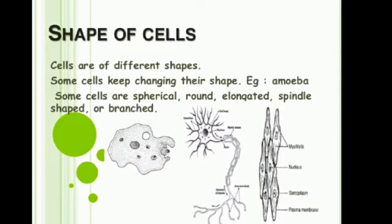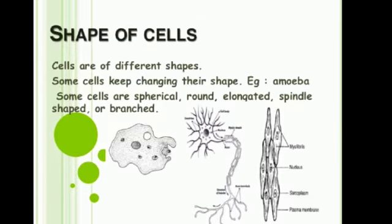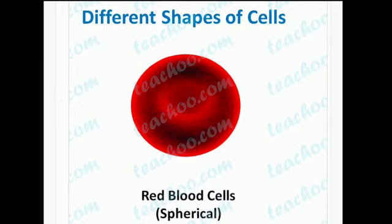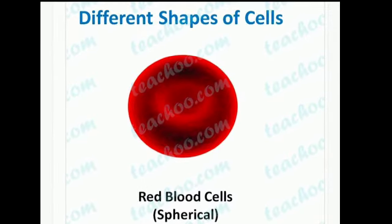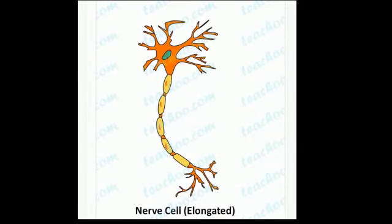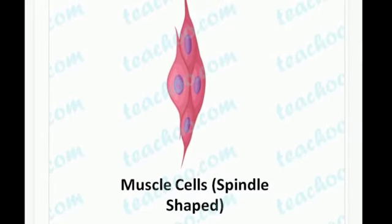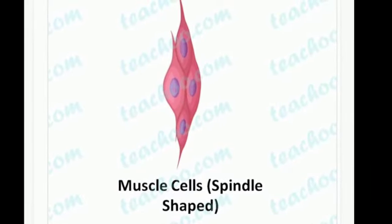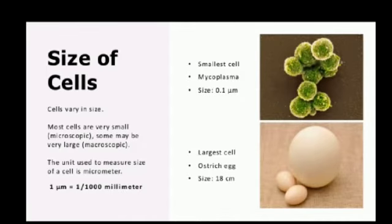Some cells are spherical, round, elongated, spindle-shaped, or branched. For example, red blood cells which make our blood are spherical in shape. Nerve cells which give messages to our brain are elongated in shape. And muscle cells which make our muscles are spindle shaped.